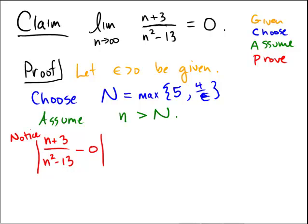So what's my advantage now? So now when we come down to the actual formal proof in the red, we have that this is equal to n plus 3 over n squared minus 13. Because of the choice of n being bigger than the max, little n being bigger than cap N, and cap N being the max of these,